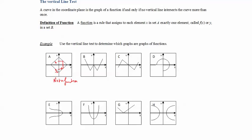The vertical line test will help us determine if a curve is a function or not. If I draw vertical lines and it crosses the curve twice, then it is not a function — because that x value will have two y values corresponding to it, which is not the definition of a function. The vertical line test states: a curve in the coordinate plane is the graph of a function if and only if no vertical line intersects the curve more than once.